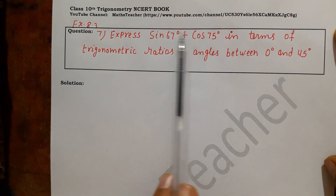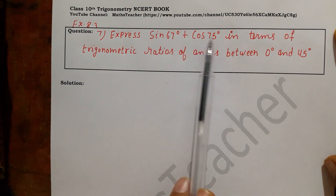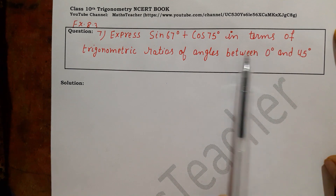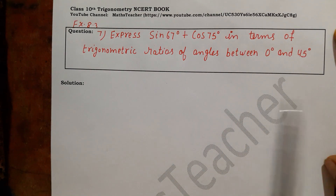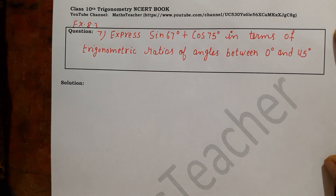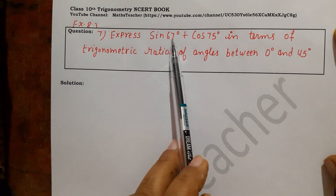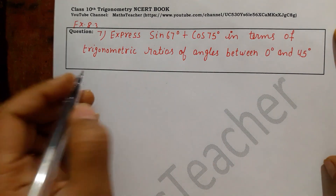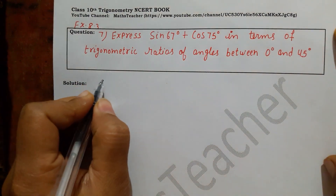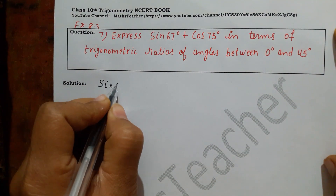So what do you have to do? You have to write the angle under 0° and 45°. After all the angles up to 45°, we have to change these angles. So let's start with the question.